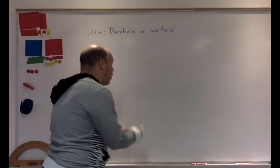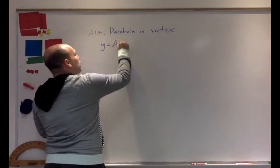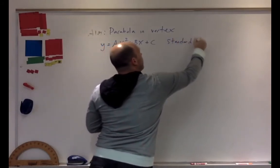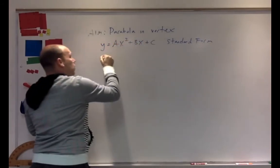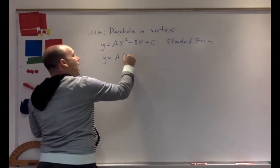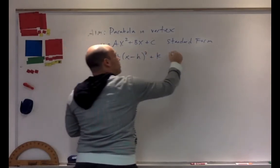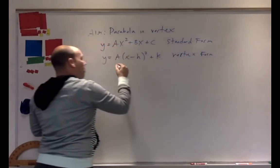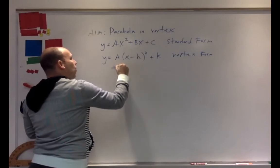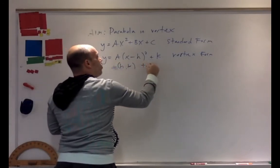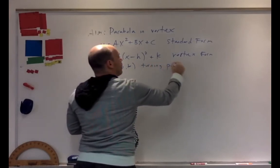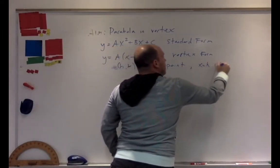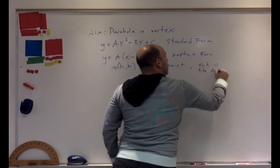What we saw in the video is that we can represent the parabola of Y equals AX squared plus BX plus C, known as standard form, using the equation Y equals A times (X minus H) squared plus K. This is known as vertex form, where HK is the turning point, and X equals H is the axis of symmetry.